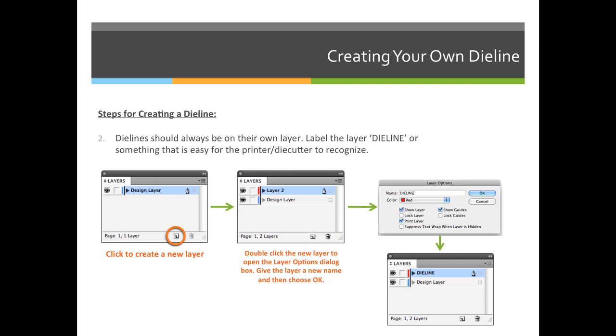Two, you're going to make sure that the die line is always on its own layer, so you should create a new layer in your program and label it die line. And then all the die line that you create should be on that layer and only that layer.